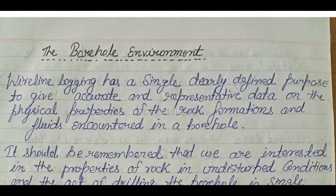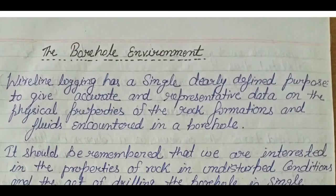This is the fifth video on the well logging series and today I am going to discuss the borehole environment. We are measuring rock properties — it can be density, travel time, or resistivity. We are basically interested in two ideal conditions. The first ideal condition is that when we are measuring, the formation is not disturbed; we are measuring a sample of undisturbed formation. The second ideal condition is that the logging tool should be motionless, with a sensor of zero dimension measuring a point sample.